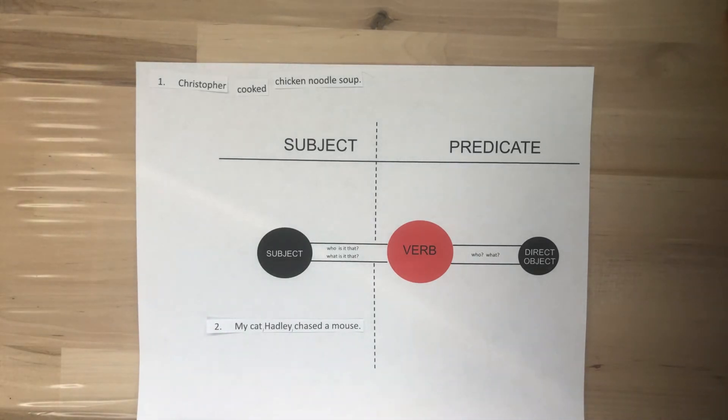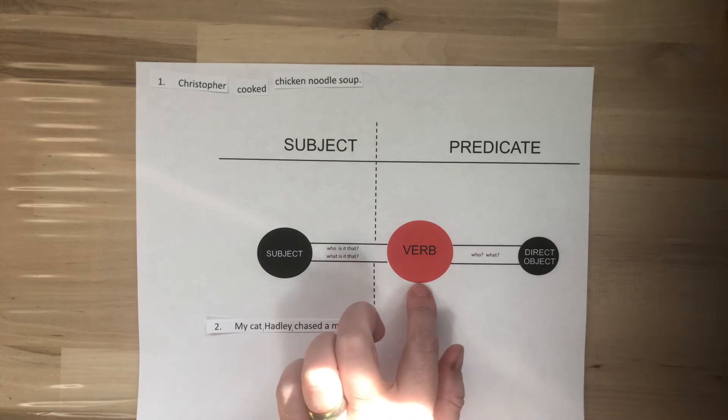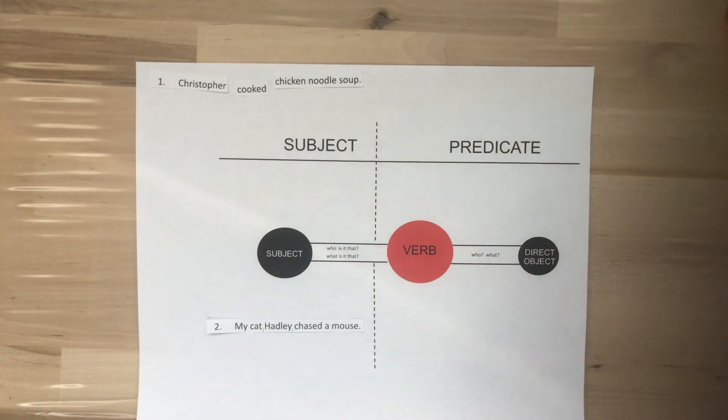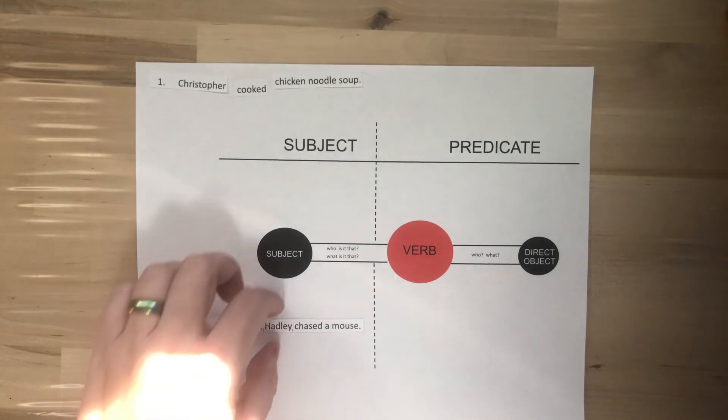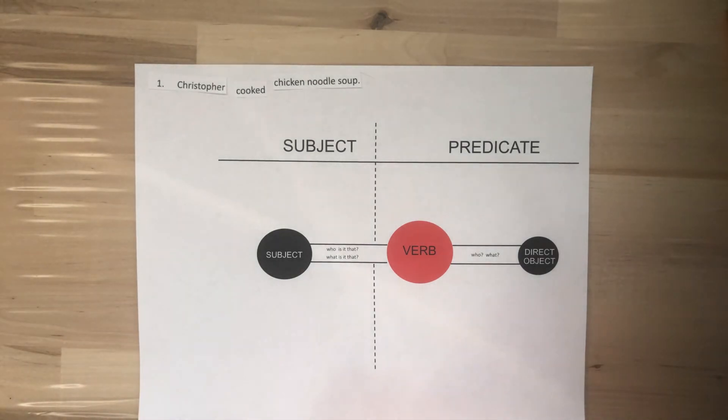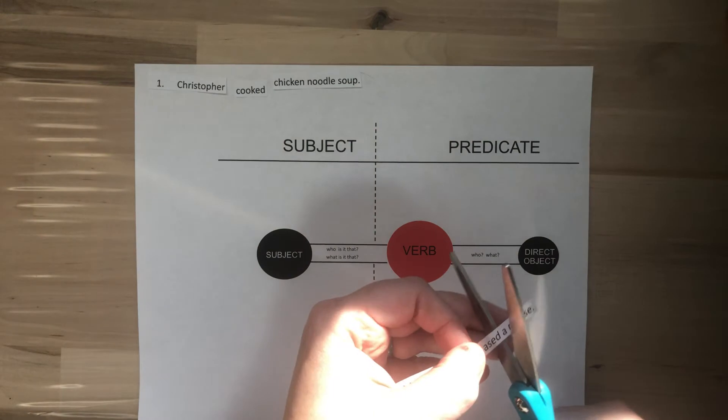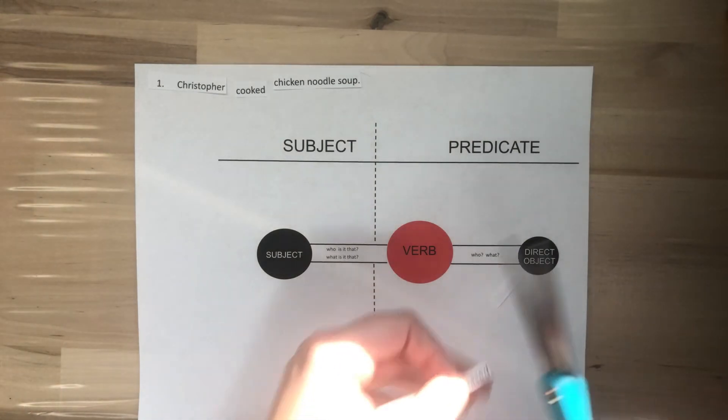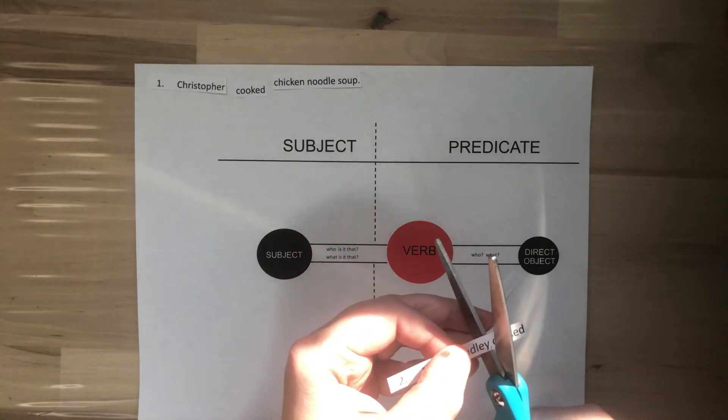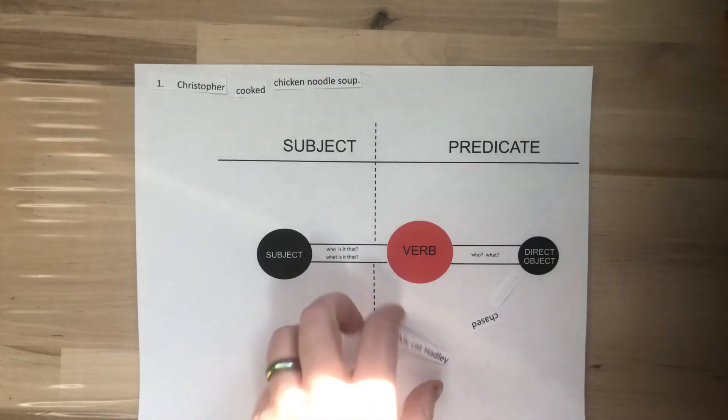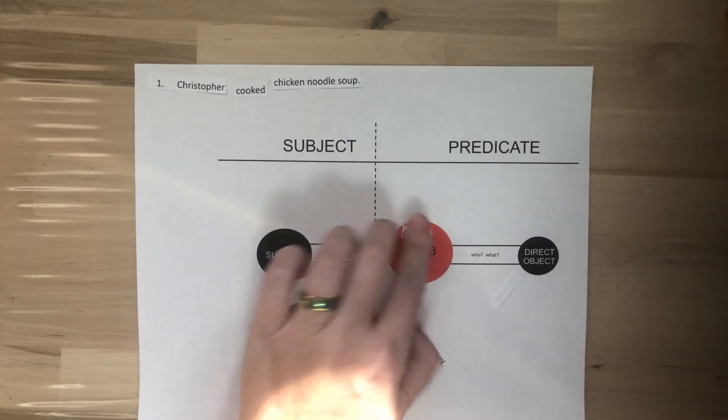Remember, the first thing we want to do is figure out what the verb is. The verb is always an action. Chased is our action in this sentence. So, let me cut out the word chased. Making sure to cut it carefully. So, here's our verb chased.